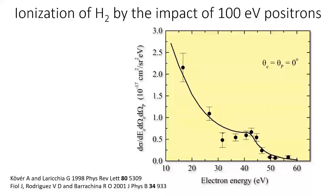What about if we consider not an ion but, for instance, a positron? Here I show a C3 calculation for the ionization of a hydrogen molecule by positron impact, compared with experimental results from Nela Laricchia's group in London. Note that, unlike the previous case, here we are not using a logarithmic scale but a linear one. The agreement between the experimental and theoretical results is extremely good.